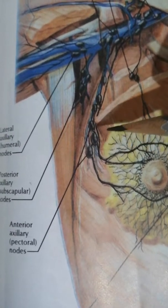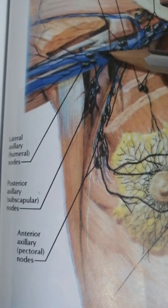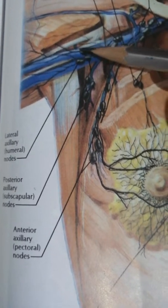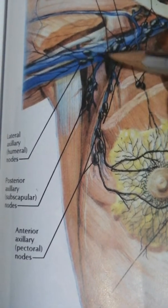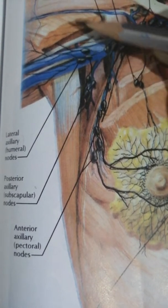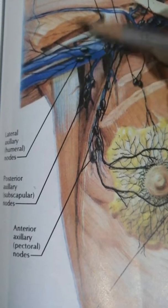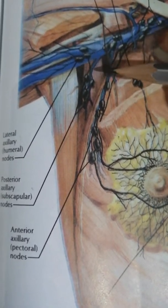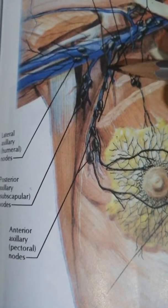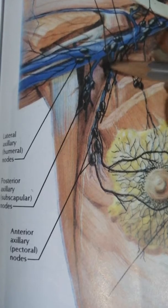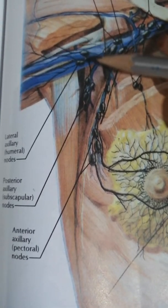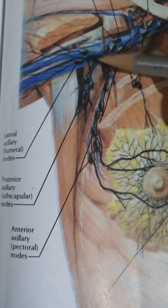The nodes of the lateral group are located in the upper arm, medial to the axillary vein, and these drain almost the whole of the upper limb. They lie along the upper part of the humerus, medial to the vein.